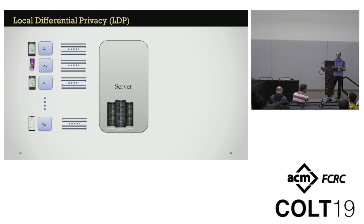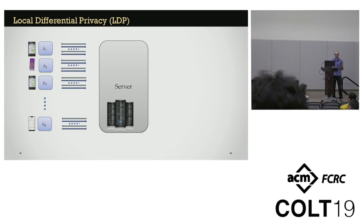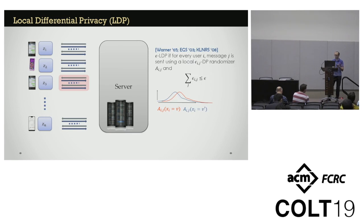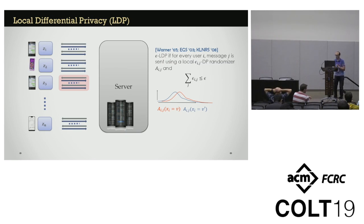Let me briefly describe what a local model of differential privacy is. This is a model in which each user holds their own data point, and they interact with a server that wants to solve some statistical problem over these data points. The users want their privacy, so the model requires the transcript of the communication between each user and the server to satisfy differential privacy — roughly meaning they use local randomizing algorithms that, for any two different values of the user's input, produce output distributions that are almost indistinguishable. This is a very nice and natural model which doesn't require the user to trust the server.